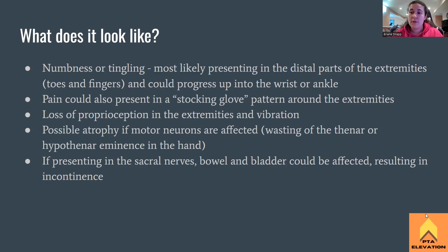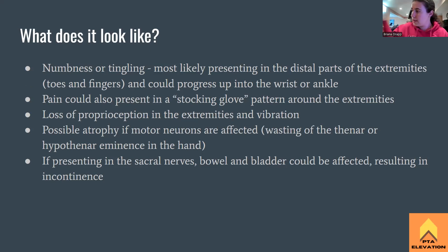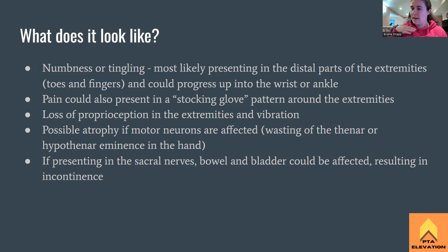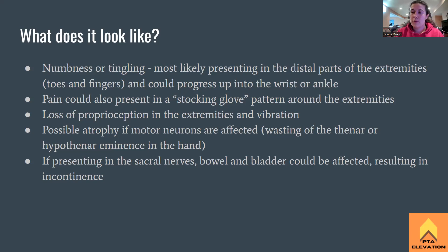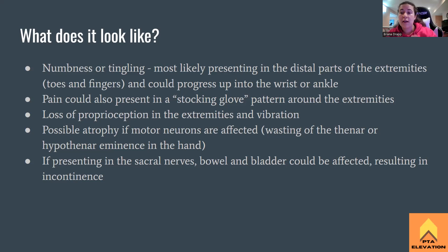So what does it look like? The big things when it comes to nerves — when patients complain about this — we automatically want to think nerve if there's any numbness or tingling. This is mostly presenting in the distal parts of the toes and fingers, as far and as distal as possible. Then, if it gets worse progressively, it could progress all the way up to the wrist or the ankle. Pain could also present in a stocking-glove pattern around the extremities.